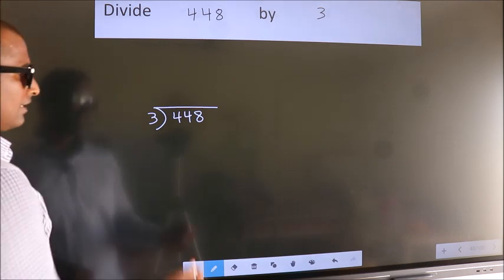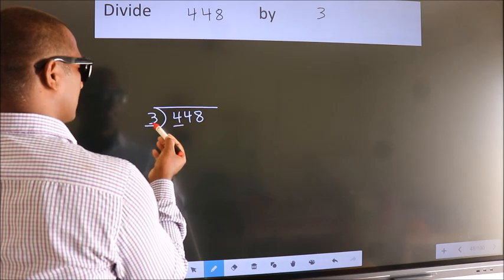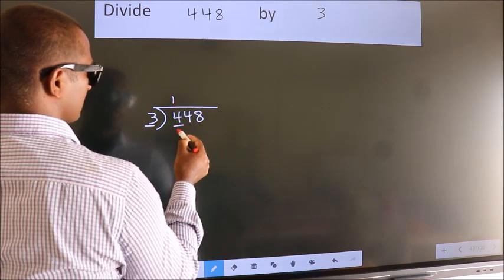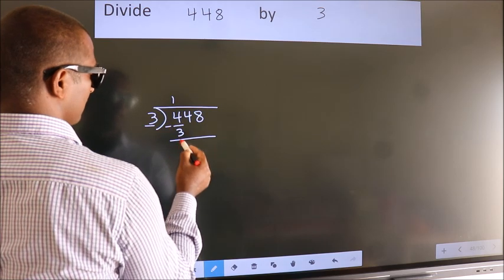Next, here we have 4, here 3. A number close to 4 in 3 table is 3 1s 3. Now, we should subtract. We get 1.